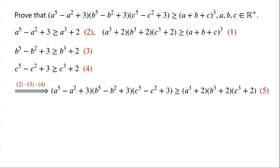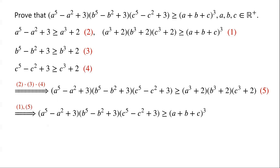We have (A⁵ - A² + 3)(B⁵ - B² + 3)(C⁵ - C² + 3) ≥ (A³ + 2)(B³ + 2)(C³ + 2) ≥ (A + B + C)³. This completes the proof that (A⁵ - A² + 3)(B⁵ - B² + 3)(C⁵ - C² + 3) ≥ (A + B + C)³.